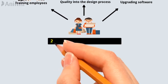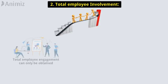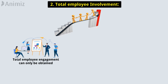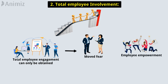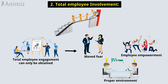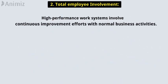Principle 2: Total Employee Involvement. All employees take part in working toward common goals. Total employee engagement can only be obtained after fear has been removed from the organization, when employee empowerment has occurred, and when management has created the proper environment. High-performance work systems involve continuous improvement efforts integrated with normal business activities.